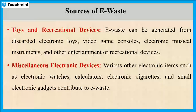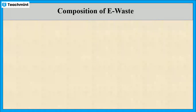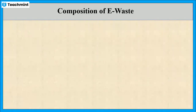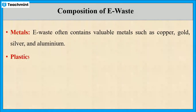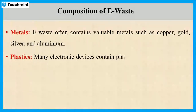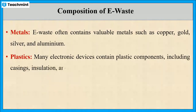Next, let us see the composition of e-waste. The composition of e-waste can vary depending on the type of device and its components. In general, e-waste contains a mixture of materials, which consist of metals such as copper, gold, silver, and aluminium. Many electronic devices also contain plastic components, including casings, insulation, and cables.